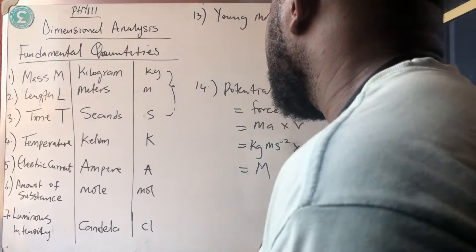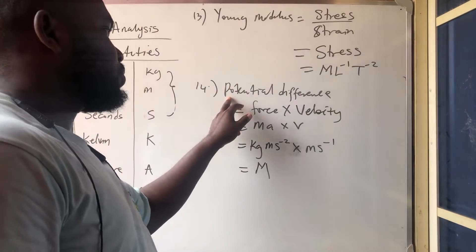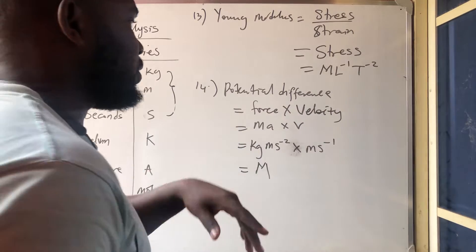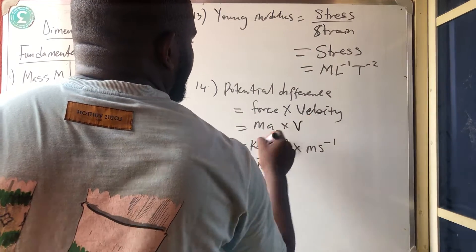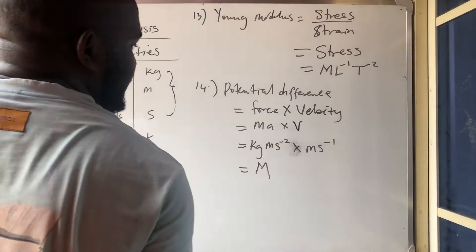So sorry for the interruption. So I was saying, potential difference is what? Force times what? Velocity. So we are having that what? Force is ma times velocity v.